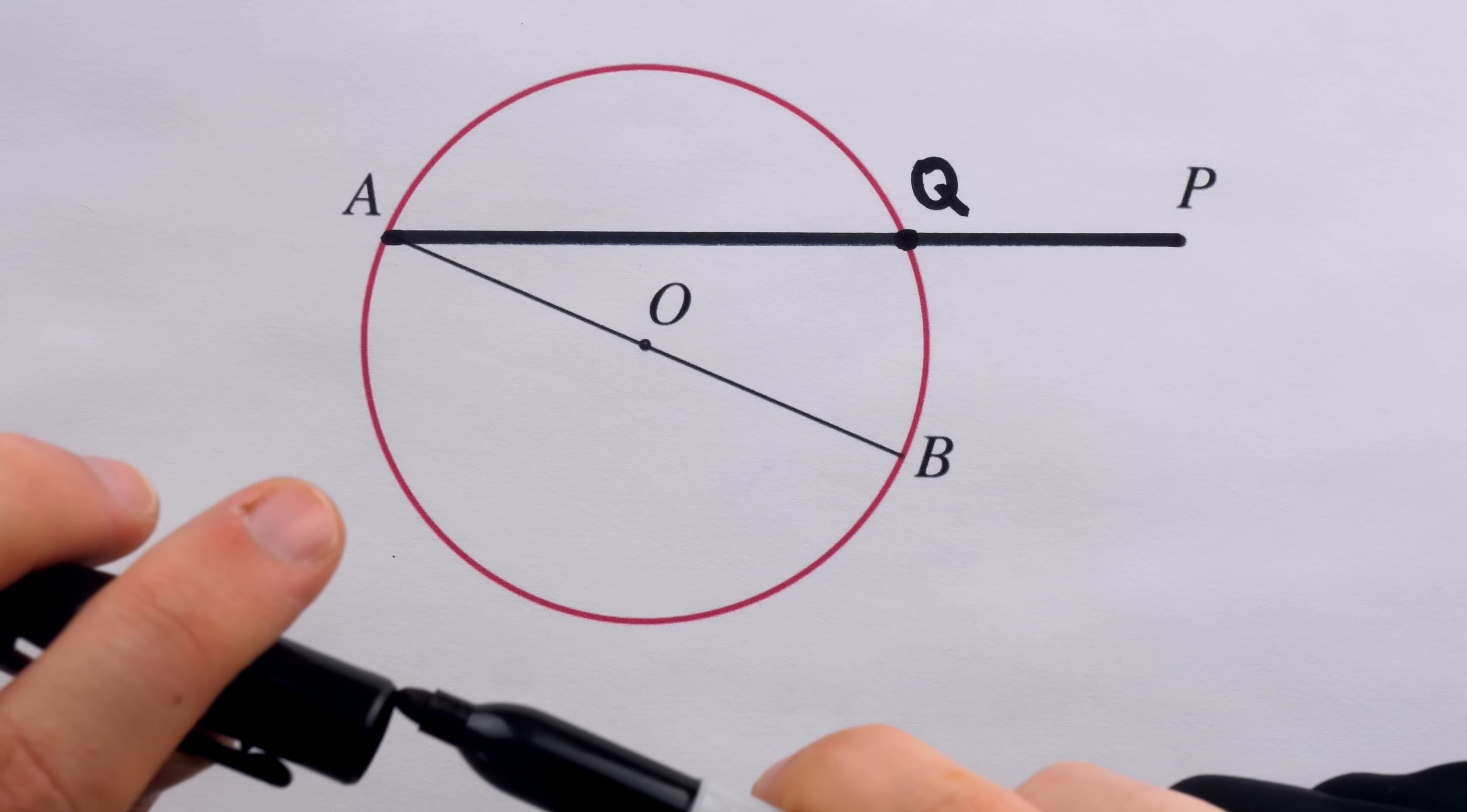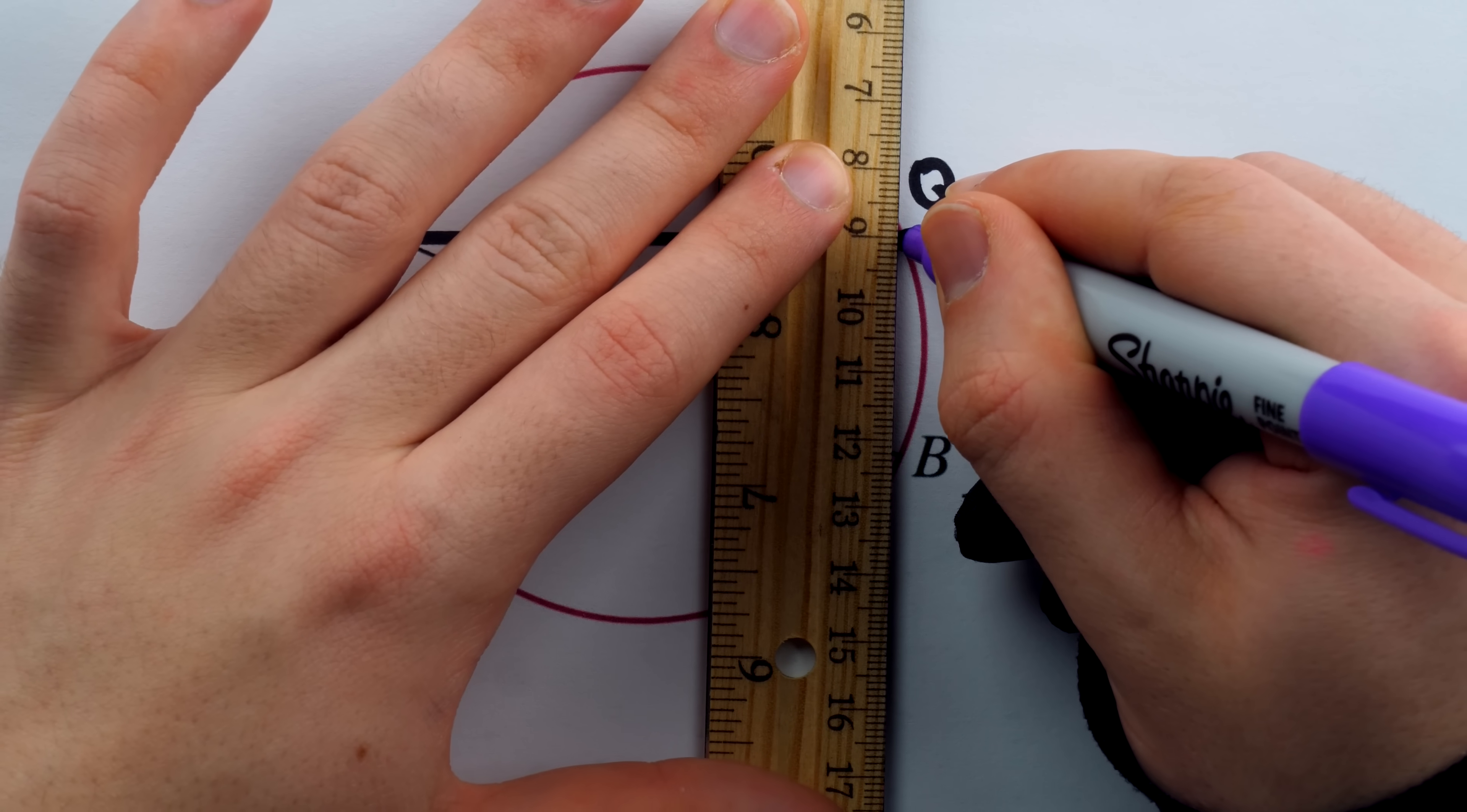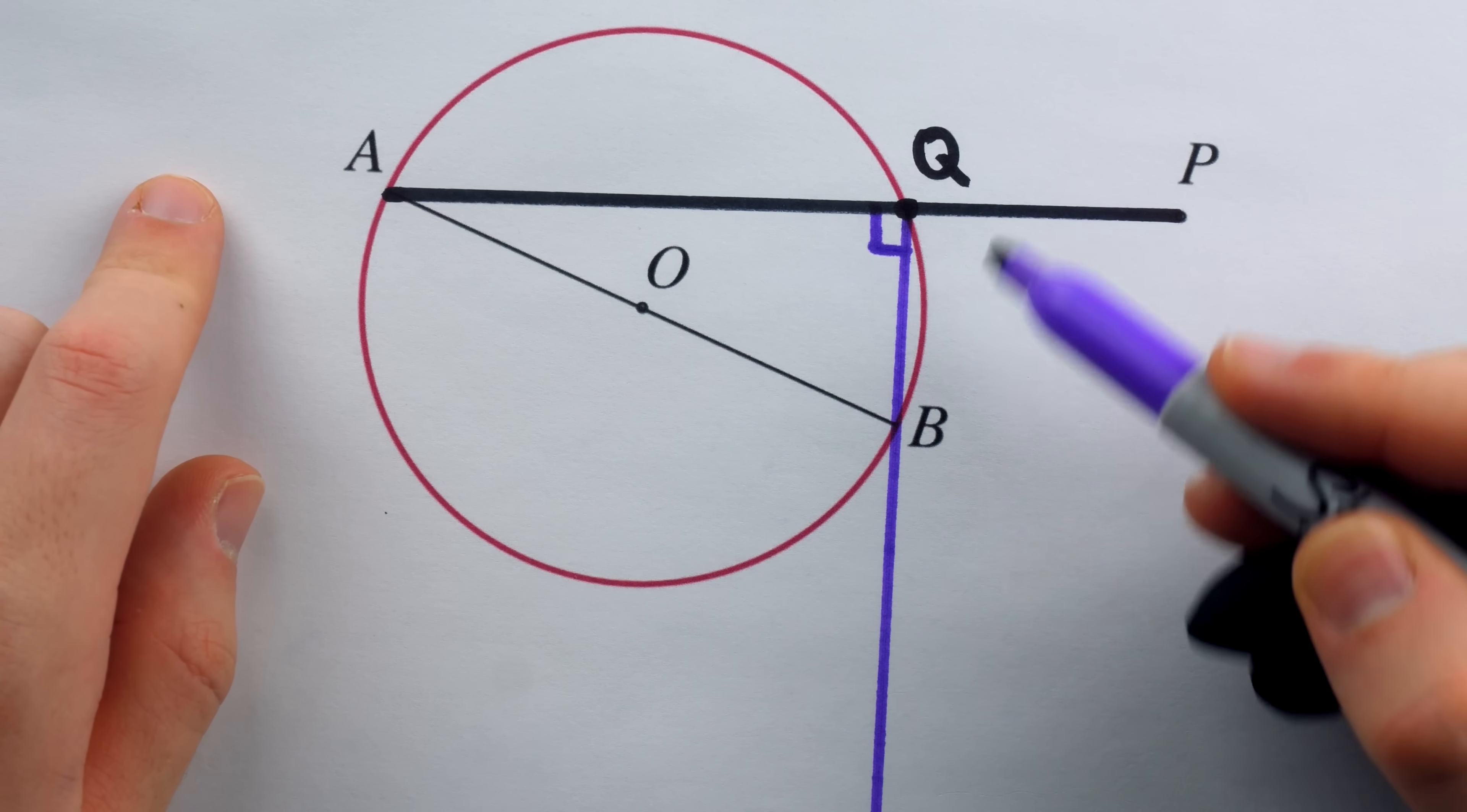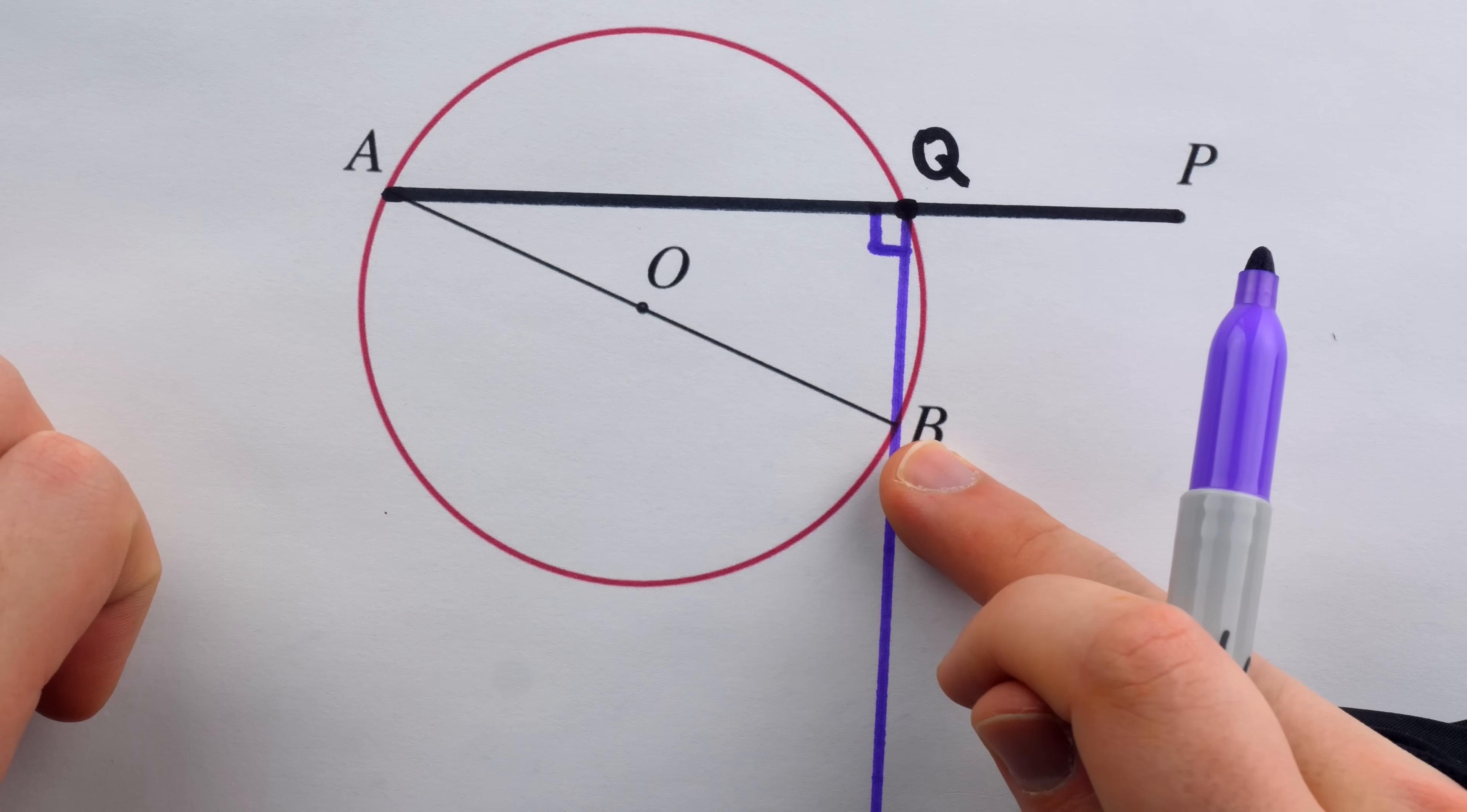We're going to get our first perpendicular right now by drawing the line that connects Q and B. And remember, it is by Thales' theorem that we know this is in fact perpendicular to the line through A and P, because of course this angle has a point on the circle as its vertex and its rays pass through this diameter of the circle.